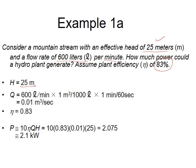First, the head is 25 meters as given. For the water flow, we need to convert from liters per minute to cubic meters per second. Multiply by one cubic meter per 1000 liters and one minute per 60 seconds. Now substitute efficiency, flow, and head into the formula.